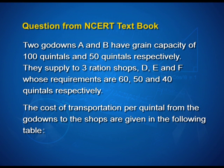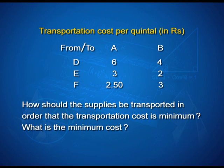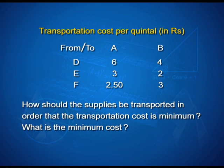Two godowns A and B have grain capacity of 100 quintals and 50 quintals respectively, supplying three ration shops D, E, and F whose requirements are 60, 50, and 40 quintals respectively. The cost of transportation per quintal from the godowns to the shops is given in a table: A to D is ₹6, A to E is ₹3, A to F is ₹2.50. Similarly, you can read the costs for transporting one quintal from godown B to shops D, E, and F.